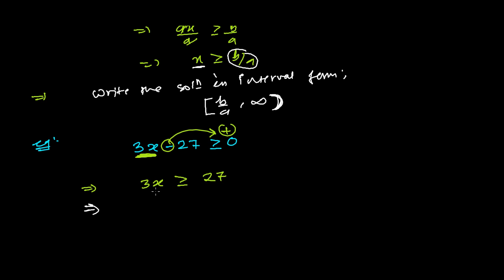The third rule is to divide by the coefficient of the variable. The coefficient is 3, so we divide both left-hand and right-hand sides by 3. The 3s cancel, and we get X ≥ 27/3, which is X ≥ 9.